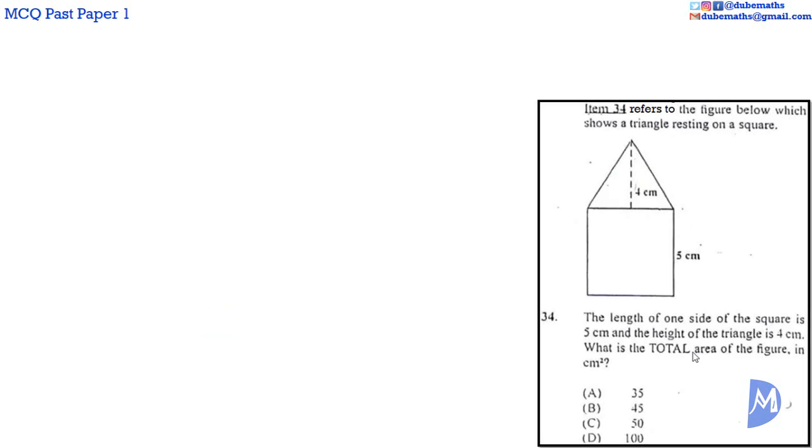Question 34. To determine the total area of the figure, we determine the areas of the square and the triangle separately and sum them. The area of the square is given by side squared. Area equals 5 squared equals 25 centimeters squared.